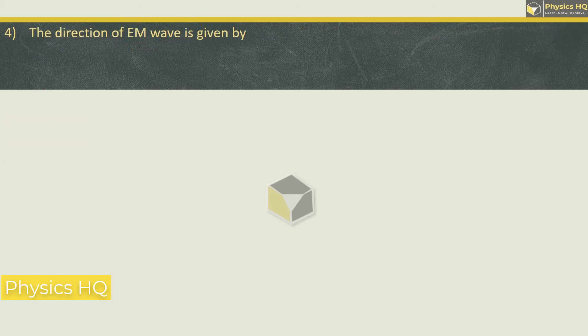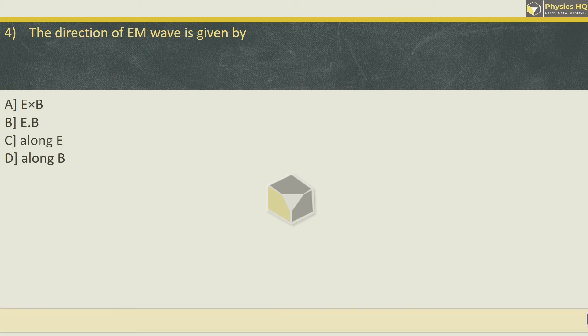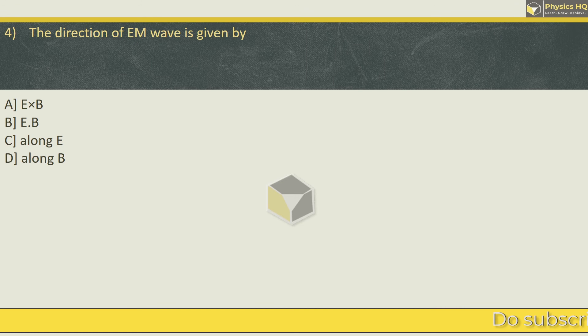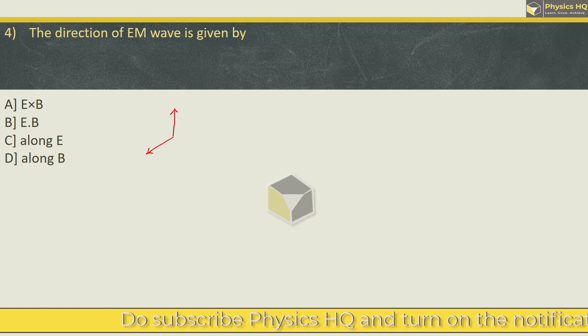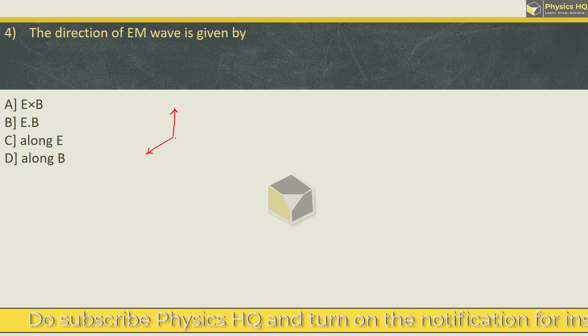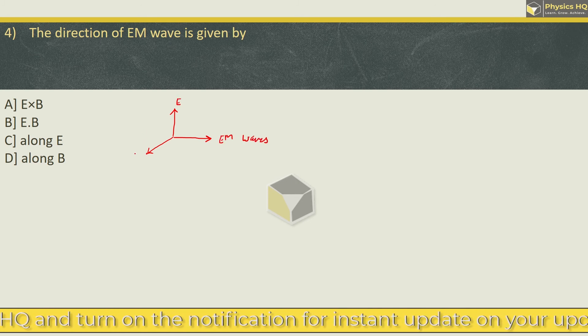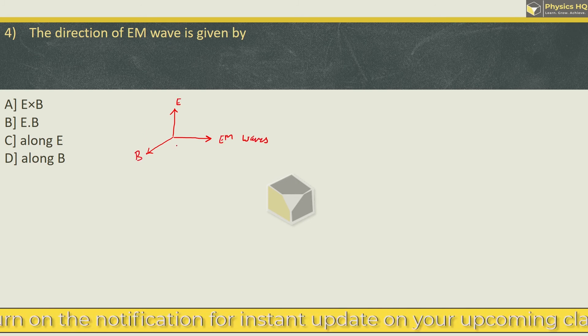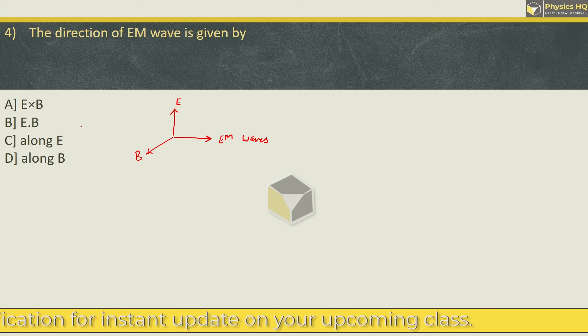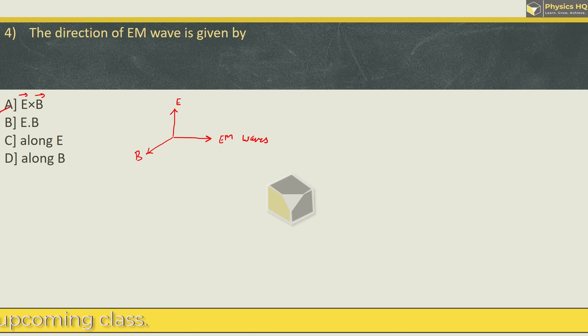Let us check out the next MCQ. The direction of EM wave is given by E cross B, E dot B, along E, or along B. Here you have to remember that in electromagnetic waves, if the electric field direction is like this, then the magnetic field is perpendicular to it, and this will be the direction of the EM waves. Remember this: all three of them are always mutually perpendicular to each other. So the correct option is option A, where vector E cross vector B gives the direction of EM wave.